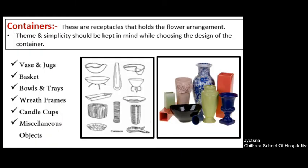Next is Container. Container plays a very important role and has to be selected very wisely in combination with the flowers, color of the flowers, size, foliage and fillers that you are using. Different containers can be used — for example, you have vase, jugs, baskets, trays, different bowls, candy cups and some miscellaneous objects. For example, a hat can also be used as a container. The professionals in flower arrangement use miscellaneous objects as containers most of the time, and it gives a very good look.